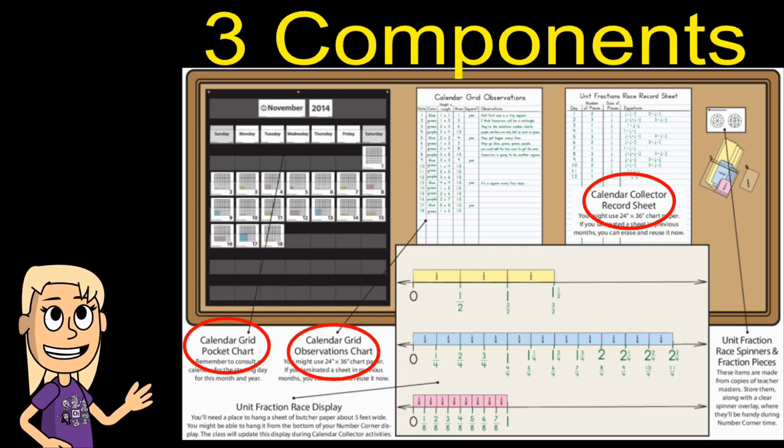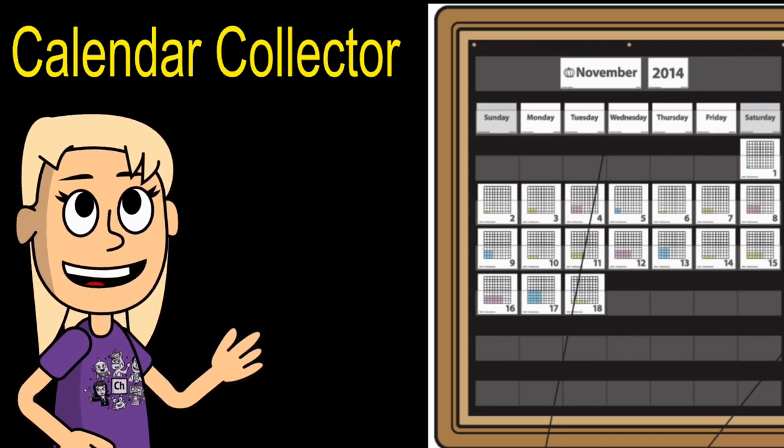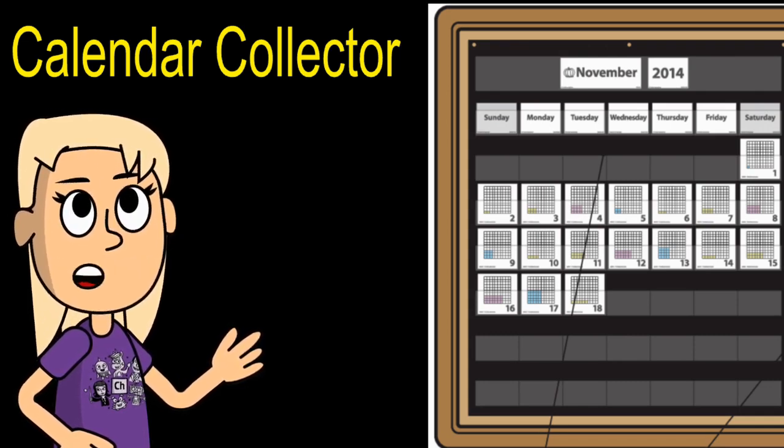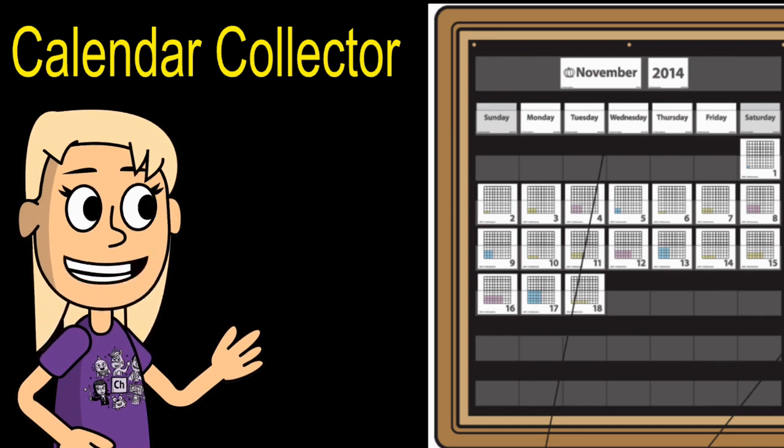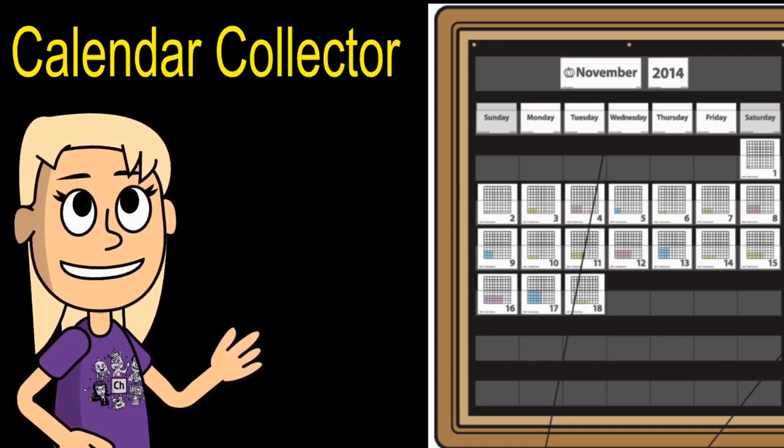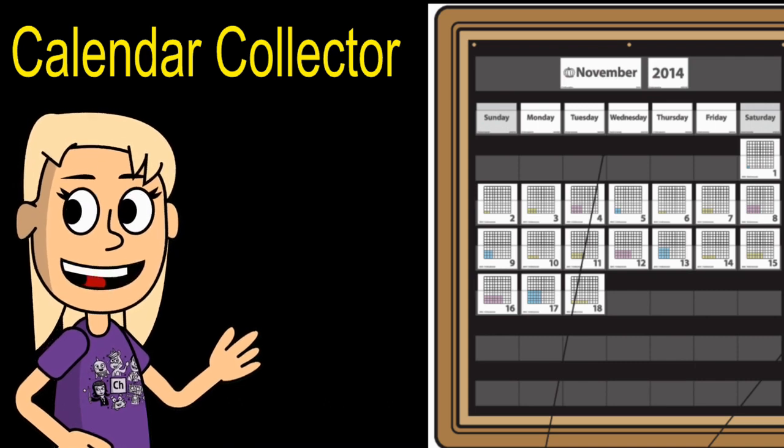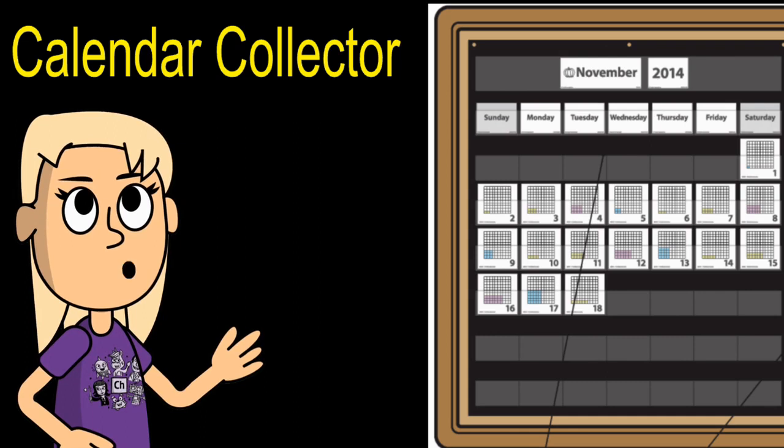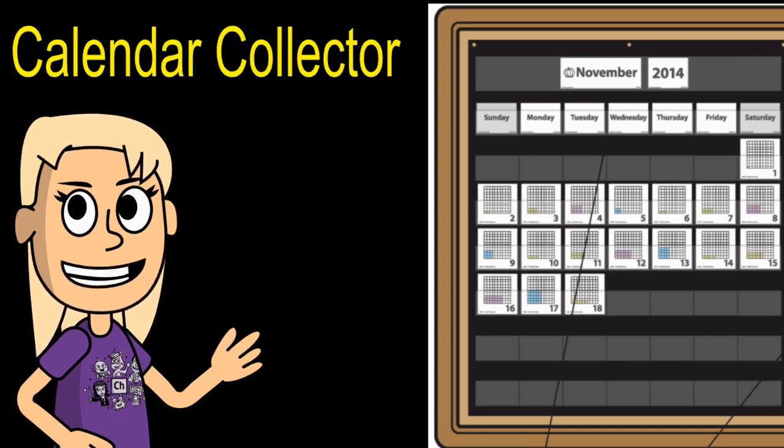Considering the three major components of Number Corner, you will need a large bulletin board area to do Number Corner. Let's talk a minute about Calendar Collector. Every day, you will turn over a new calendar card to reveal a new mathematical clue. Turn over Saturday and Sunday's clues along with Mondays. You'll record the day's data on the Calendar Grid Observations Chart and on the Calendar Collector Record Sheet. Both of those will be created by you. There will be an occasional day missed because of conflicts with school functions. Don't worry about it. Just pick up where you left off and keep going.